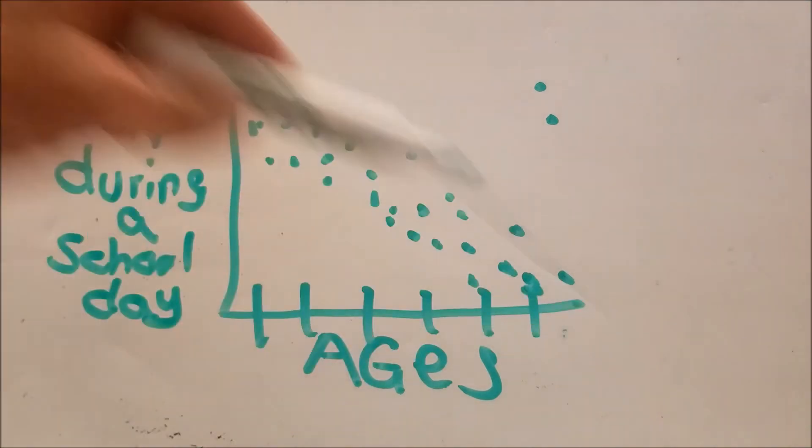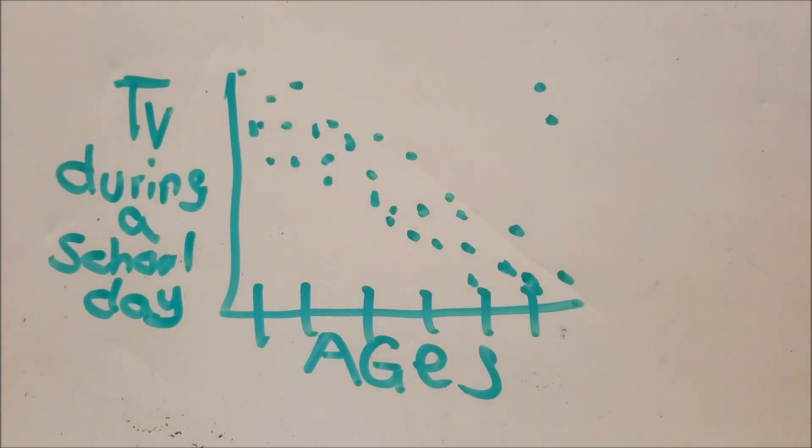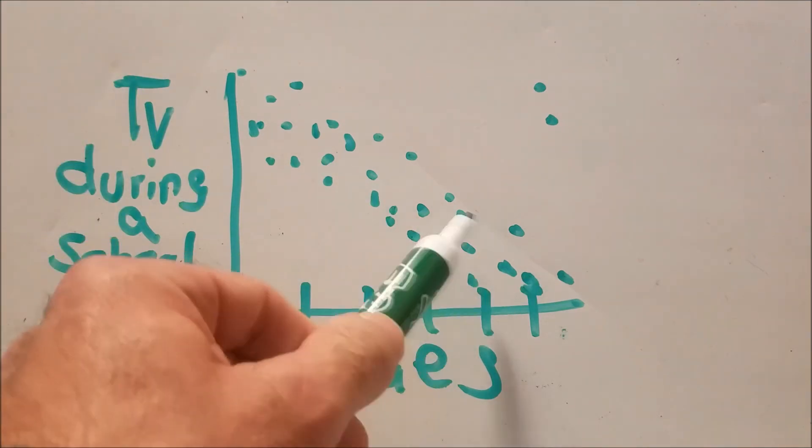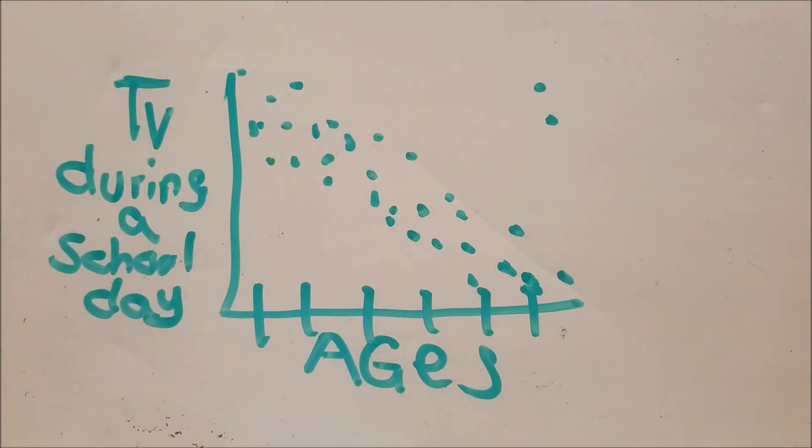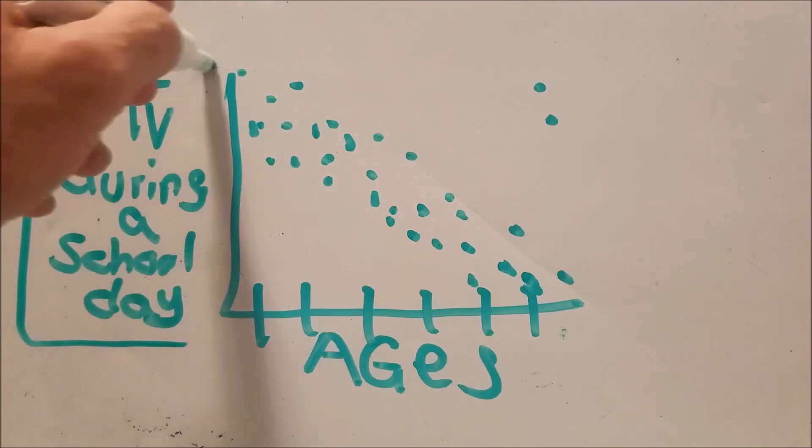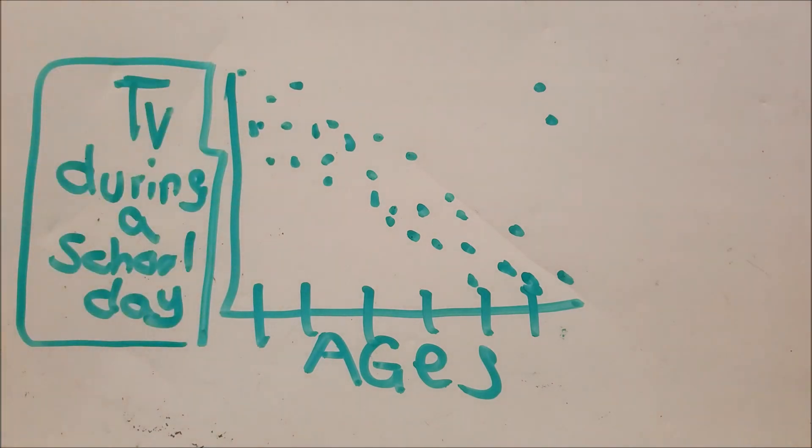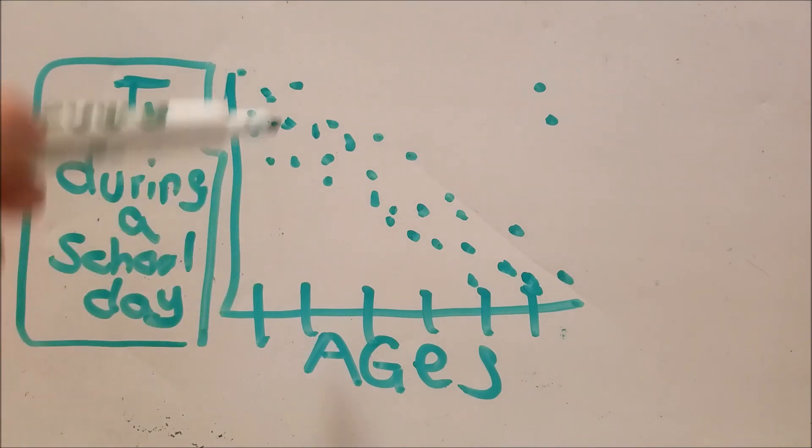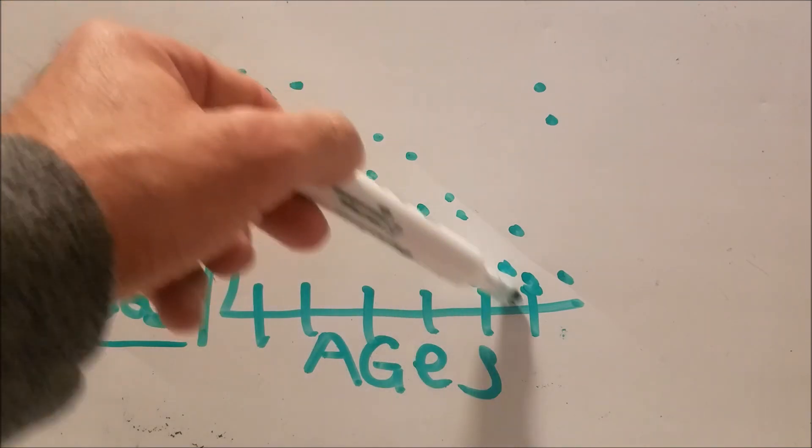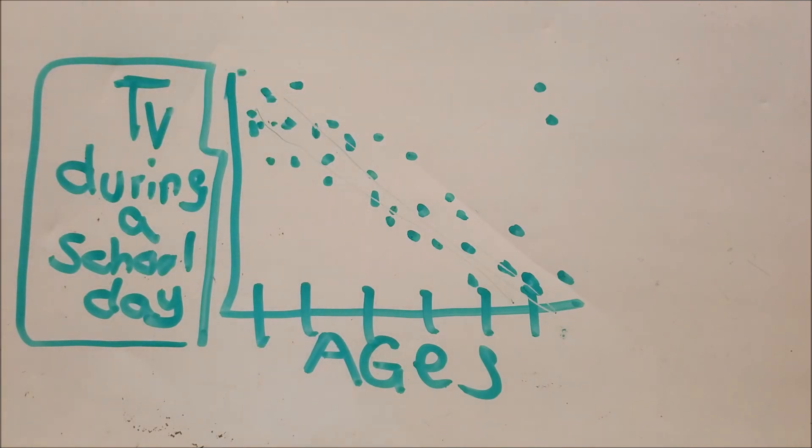Why would it go down as the ages increase? Because people over here are in school, right? They're in school at this time, so they shouldn't be watching TV during the day, during school day, right? Unless they're sick. But for the most part, you know, a one-year-old is probably home, and they're watching TV, or the TV's on, right? But as the ages increase, watching TV during a school day should decrease.